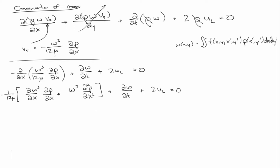We're going to ignore leak-off. So from here on out, that term is zero. The homework assignment I have in mind is to compare the numerical solution to the KGD solution. The KGD solution also ignores leak-off. So we're going to solve this numerically and compare it to KGD.